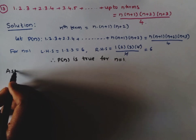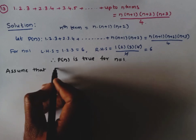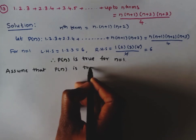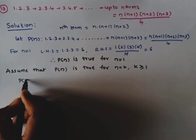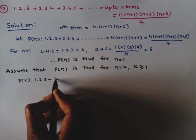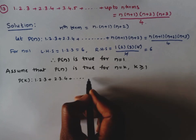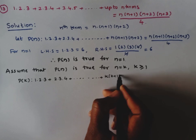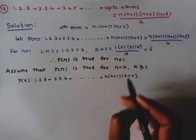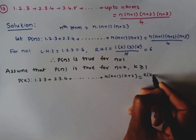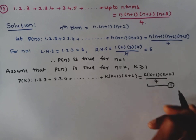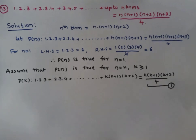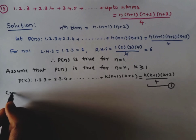Assumption: Assume P(n) is true for n=k, where k ≥ 1. So P(k): 1·2·3 + 2·3·4 + ... + k(k+1)(k+2) = k(k+1)(k+2)(k+3)/4. Let this be equation 1. We need to show P(k+1) is true. For that, consider the sum of k+1 terms.